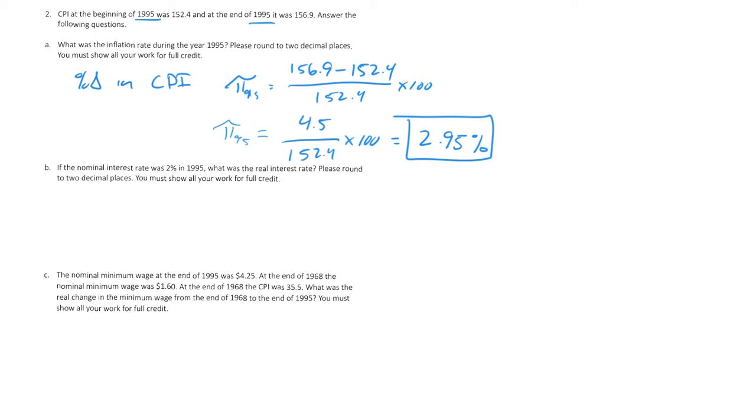The second part of this question is asking for the real interest rate. We know this from the Fisher equation. The real interest rate is approximately my nominal interest rate minus inflation. If we're given the nominal interest rate of 2%, then we know the real interest rate is 2% minus 2.95. And so we will get my real interest rate being negative 0.95%.